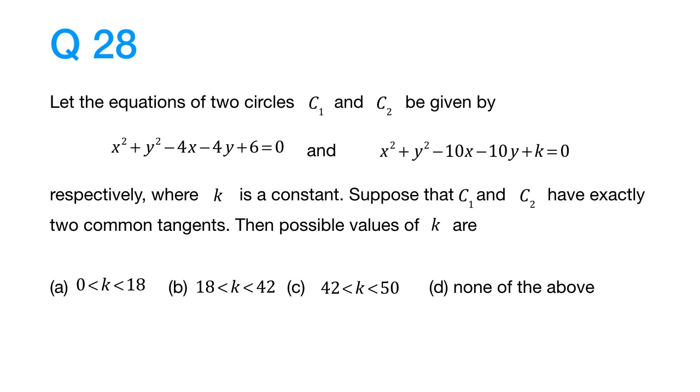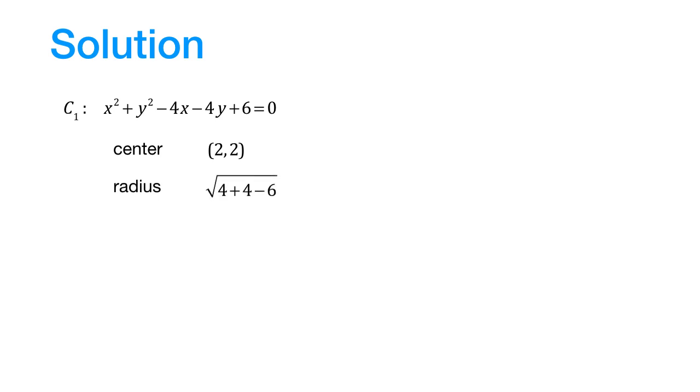How do we do this question? Well, first of all, let us write down the equation of the first circle. So for this circle, the center would be at the point (2, 2). Let us also find out its radius. The radius would be given by this number which is equal to the square root of 2.